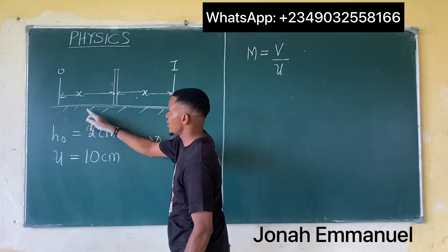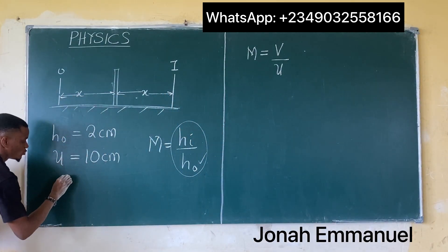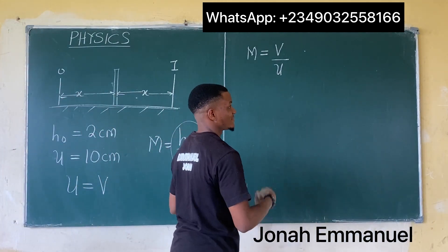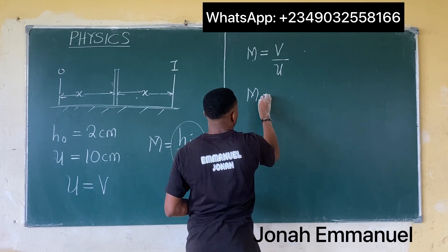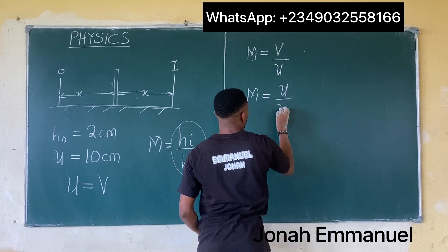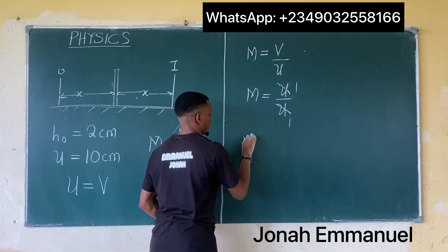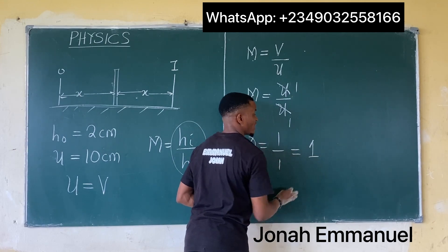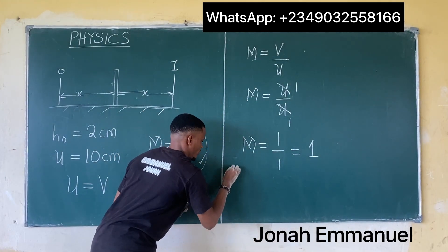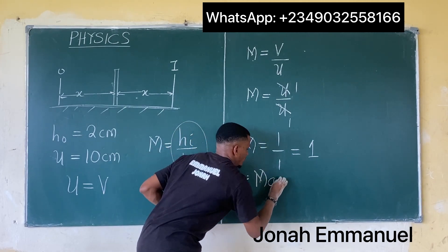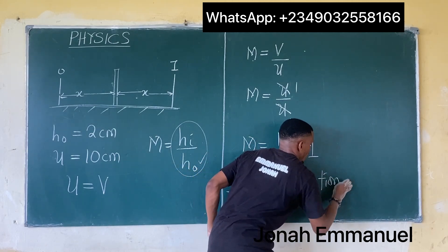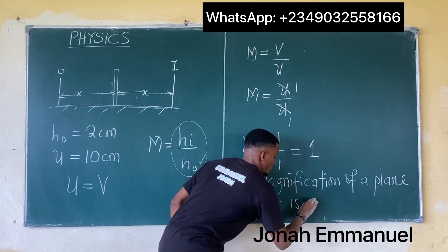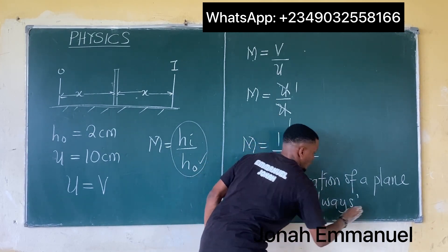For a plane mirror, the object distance from the mirror u equals the image distance from the mirror v. So magnification m equals v over u equals u over u equals 1. Please note: the magnification of a plane mirror is always 1. This is because for a plane mirror, the image distance always equals the object distance, so they cancel, giving 1.